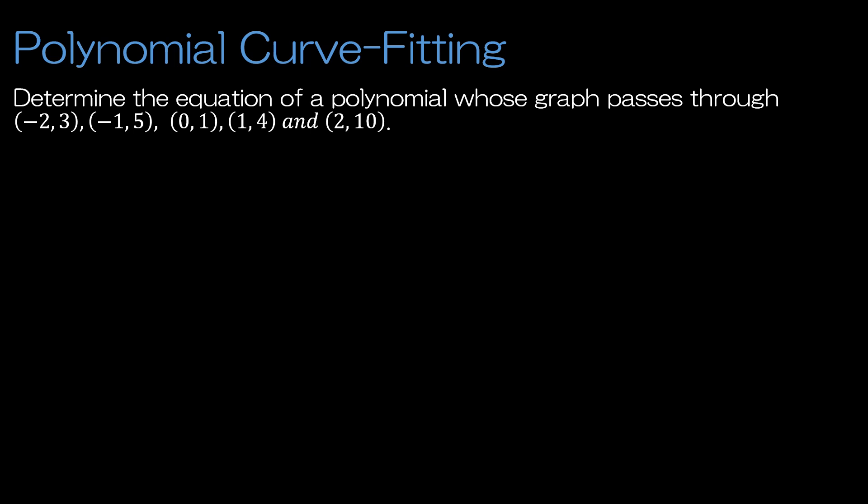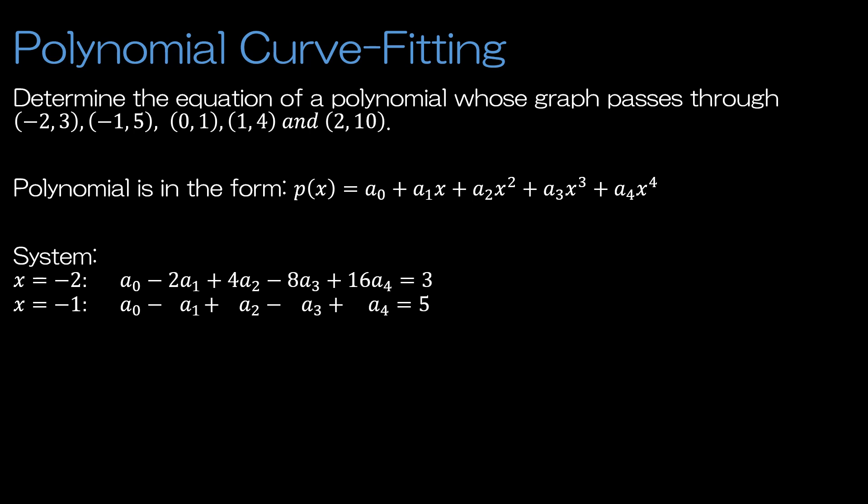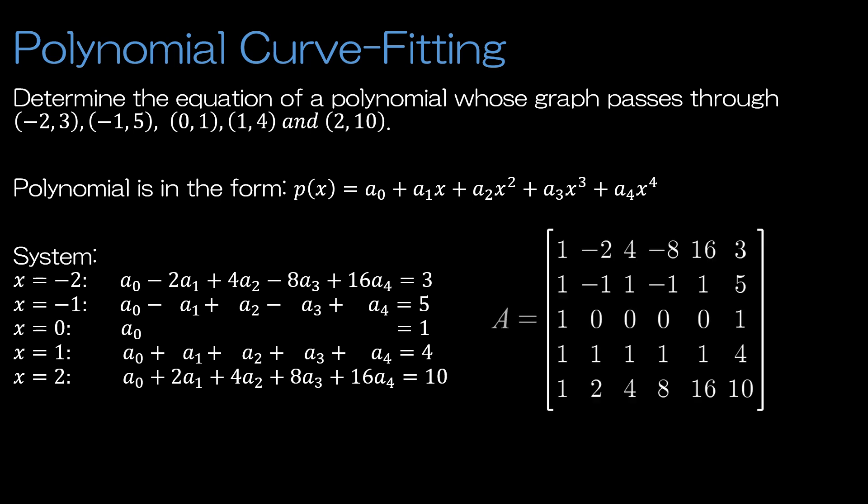To begin, we have 1, 2, 3, 4, 5 points, so we need a polynomial with degree of 4. We'll use those 5 points just as before: plug in negative 2, set it equal to 3; plug in negative 1, set it equal to 5; plug in 0, set it equal to 1; plug in 1, set it equal to 4; and plug in 2, set it equal to 10, then write the corresponding matrix.